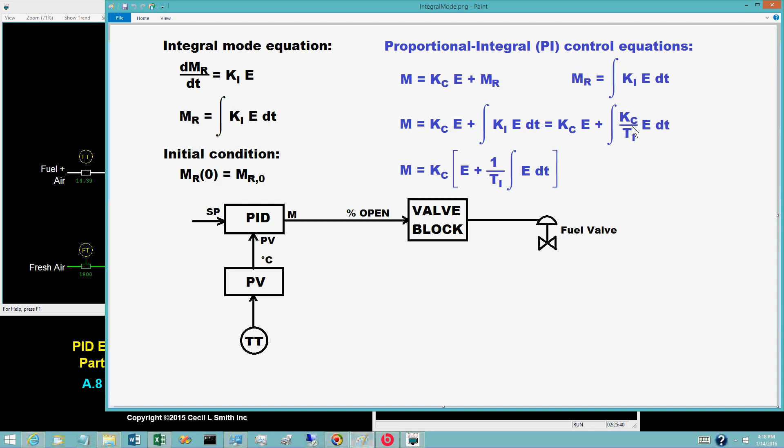The customary equation for PI control is obtained by moving K sub C over T sub I through the integral and then factoring K sub C from each term.